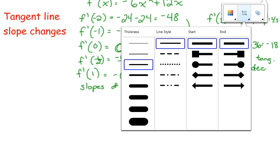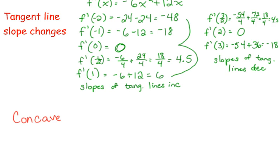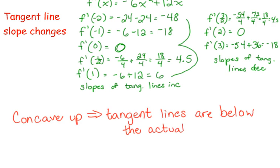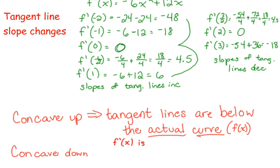Tangent lines are below the actual curve or function, but usually they use the word curve. Yes, the actual curve, F of X. They don't use the word actual, they use just the word curve, but I'm throwing the little adjective in there. Concave down. Or also, F prime of X is increasing. Concave down, the tangent lines are above.